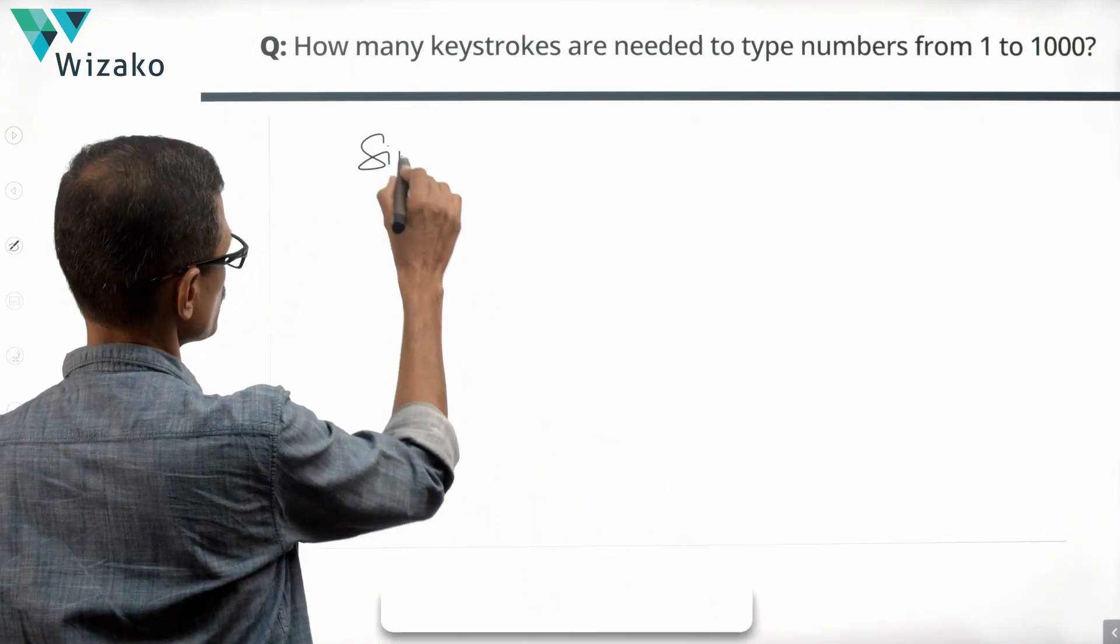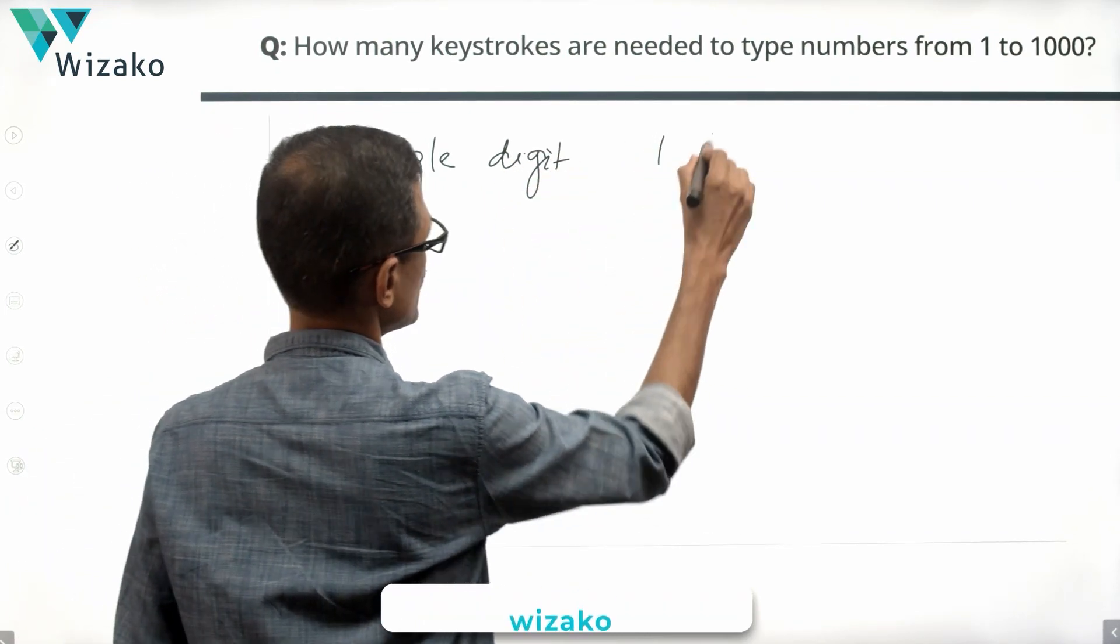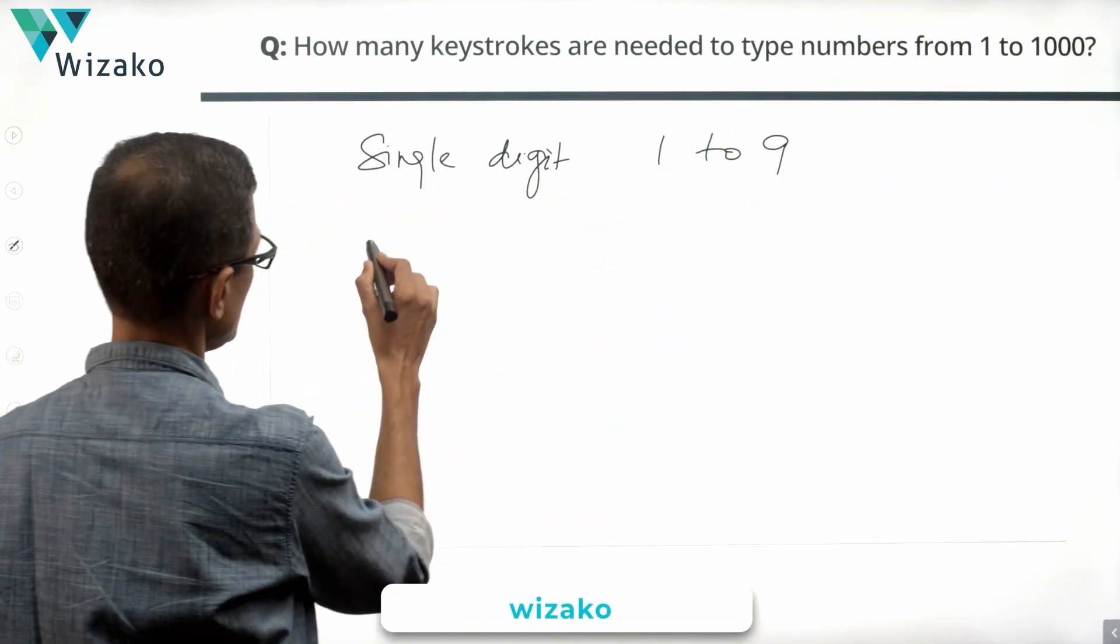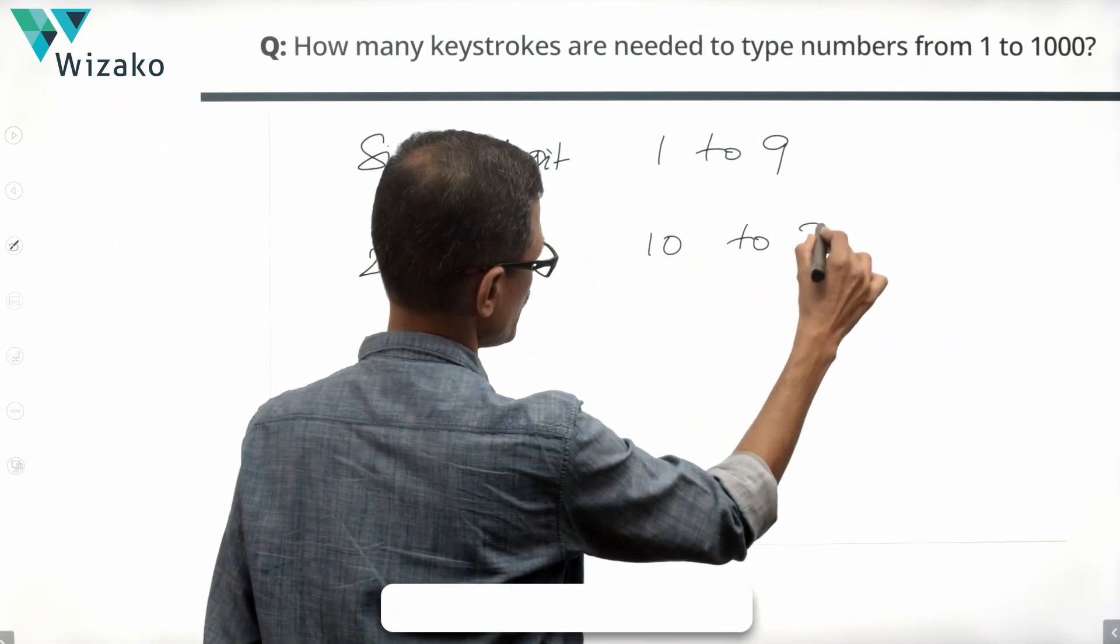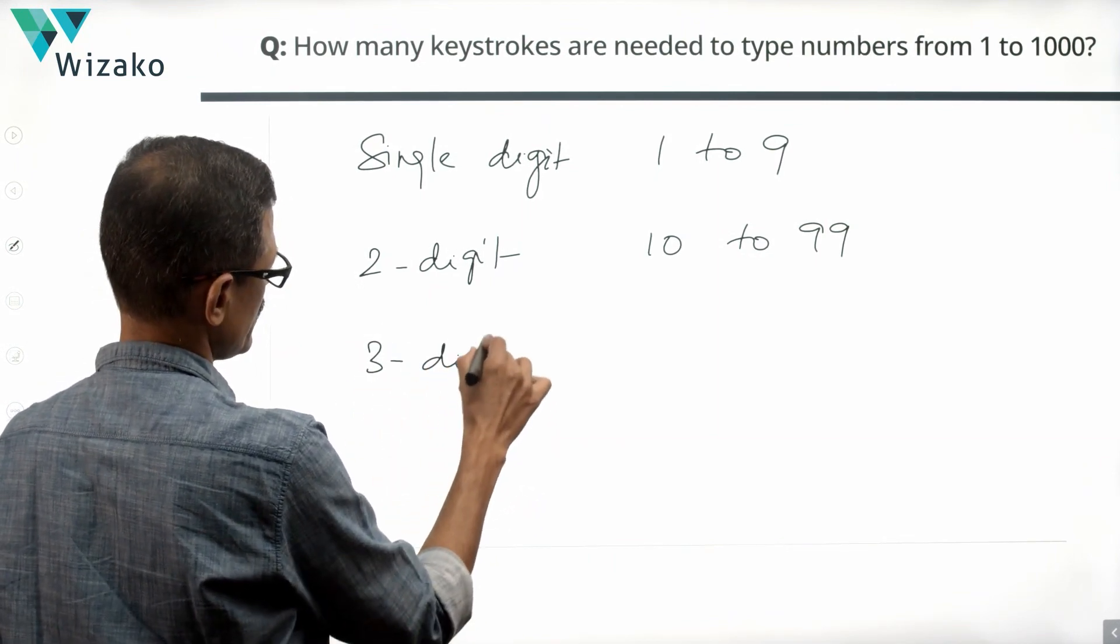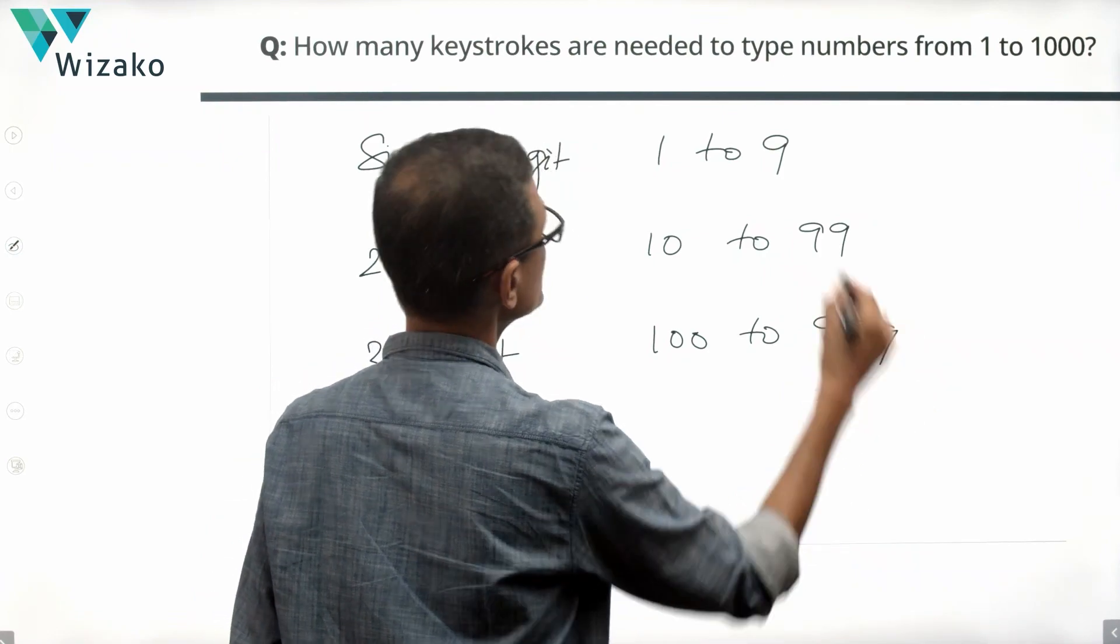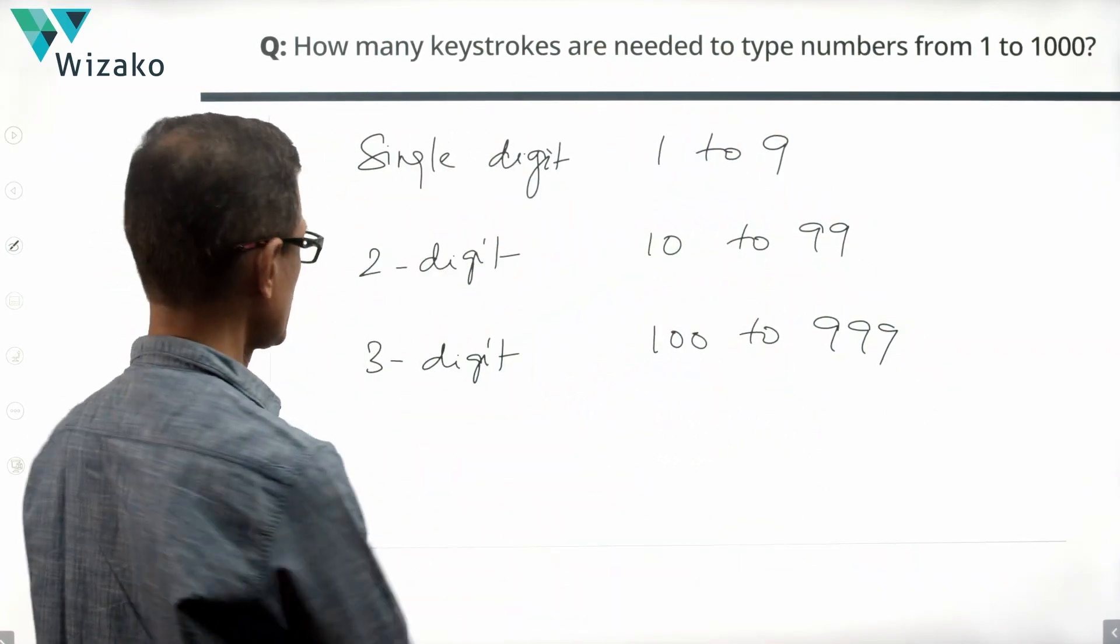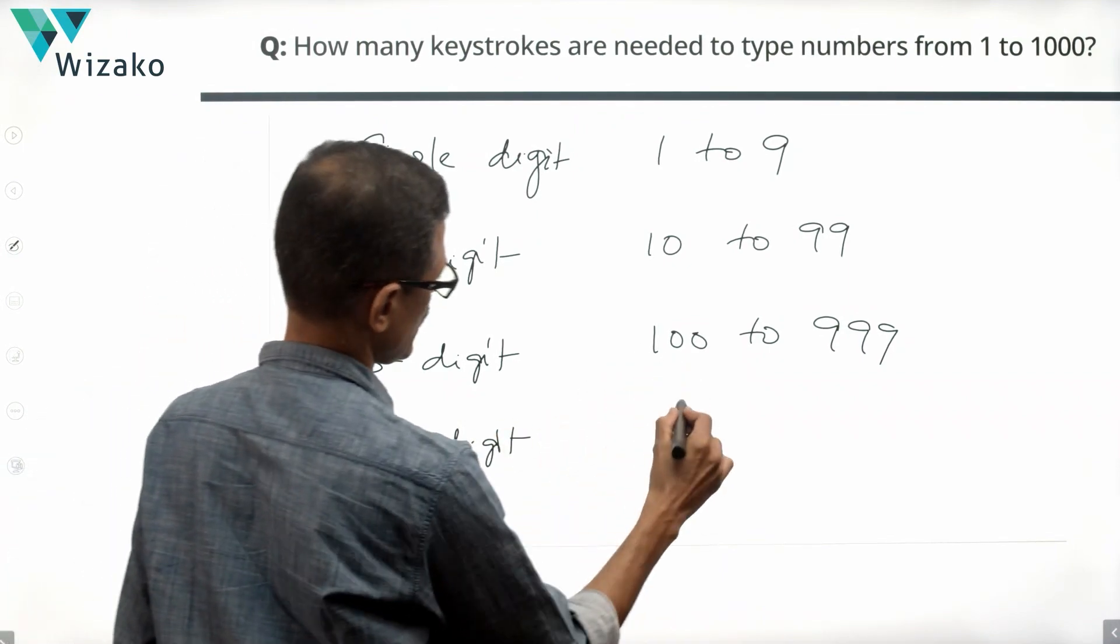Single digit numbers. What do we have? Single digit numbers are 1 to 9. Then we have 2 digit numbers. How many of them? Starts with 10 and goes all the way up to 99. And then we have 3 digit numbers which start from 100, go all the way up to 999. We're numbering from 1 to 1000. So we have 1 four digit number also to contend with.